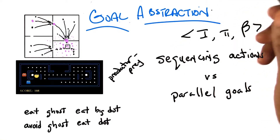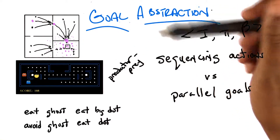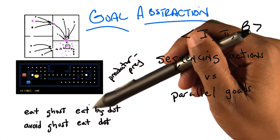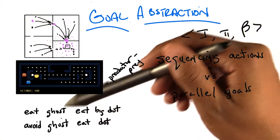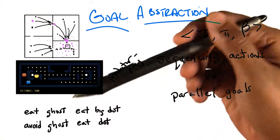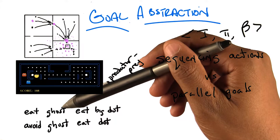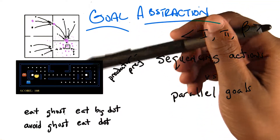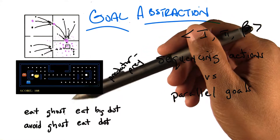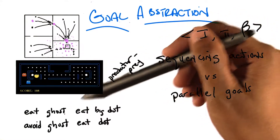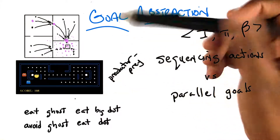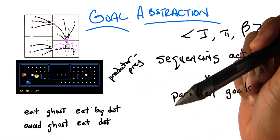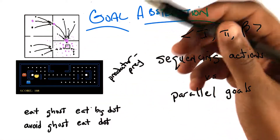That makes sense. I like this notion of thinking about options — or actions — as always accomplishing goals and always happening in parallel. Options are easier to think about than primitive actions that way, because when we define the options, we naturally think of them as accomplishing goals. Primitive actions are so low level they don't really have big high-level things they're trying to accomplish. But options almost always do. That's why they're useful and that's why people tend to come up with the ones they do.